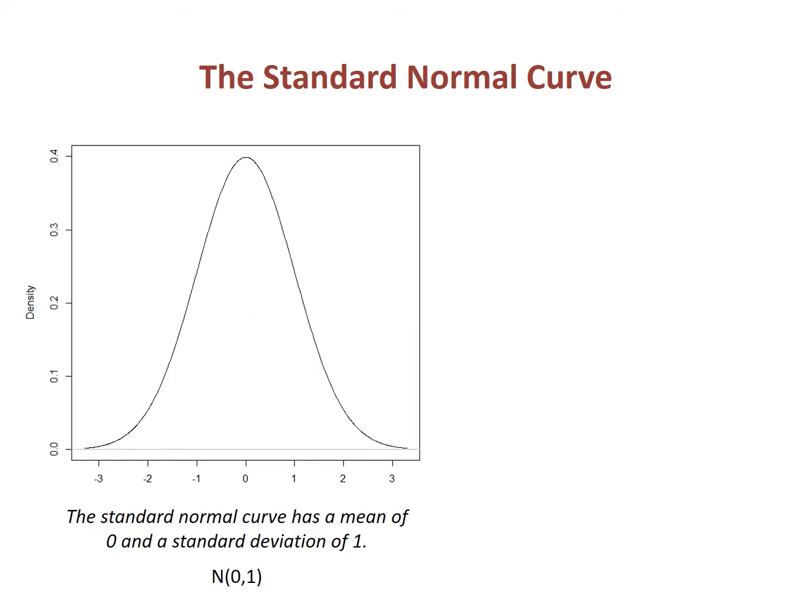We all know the normal distribution — it is commonly called the bell curve. All normal curves are a variation of the standard normal curve, which has a mean of zero and a standard deviation of one. This curve is often abbreviated using the capital letter N with a zero followed by a one in parentheses: zero for the mean and one for the standard deviation.